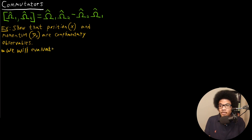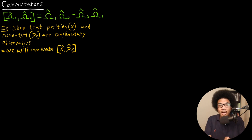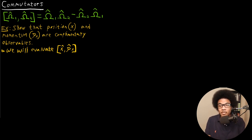We need to evaluate the commutator between the position and momentum operators. So we'll have the position operator and the momentum operator. If we evaluate this commutator and we get something that's not zero, then that means these operators are complementary — position and momentum would be complementary observables. So we want to evaluate this commutator.